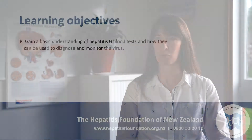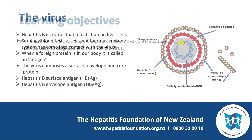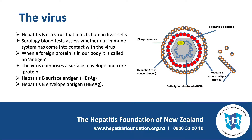The hepatitis B virus is one that infects human liver cells. Serology blood tests are used to assess the impact of diseases on the human immune system. When a foreign protein is present in our blood it is called an antigen, and the virus is made up of a number of proteins.